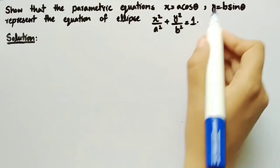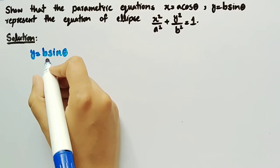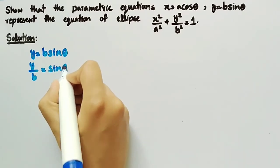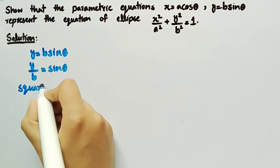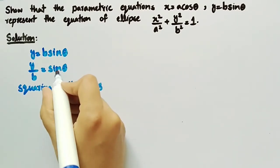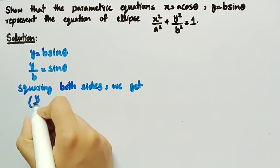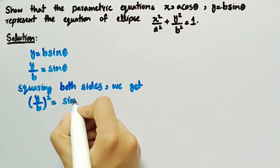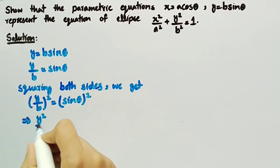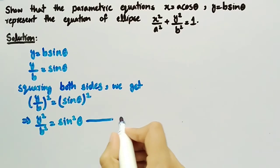It is also given that y = b·sin θ. By dividing both sides by b, we can write y/b = sin θ. Now by squaring both sides of this equation, we get (y/b)² = sin²θ, which can be written as y²/b² = sin²θ. Let this be named as equation number two.